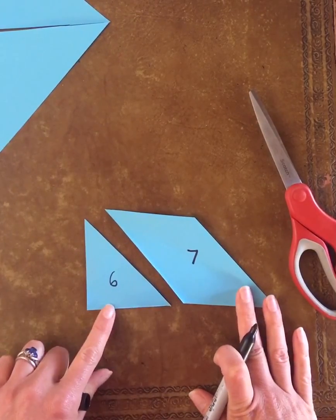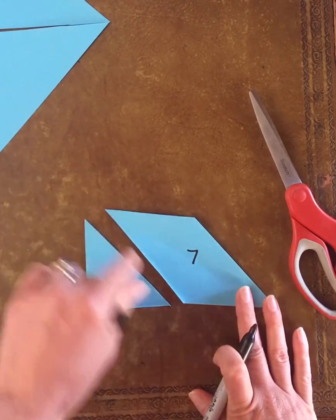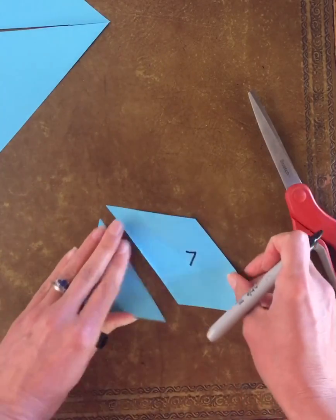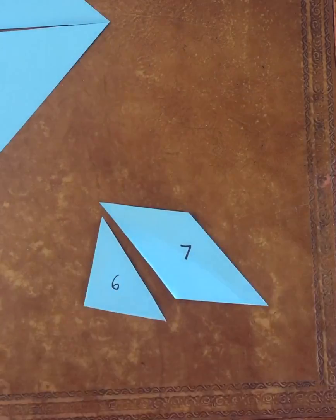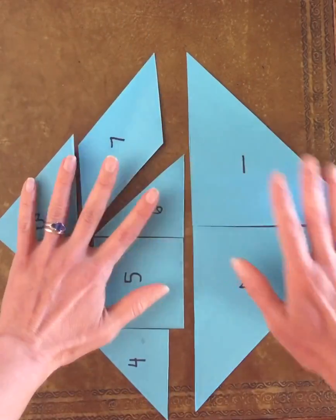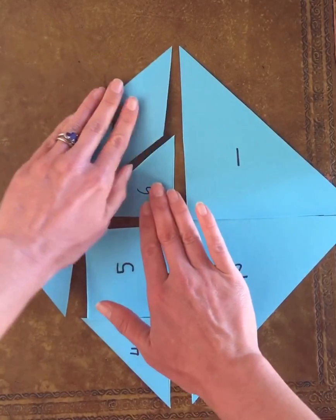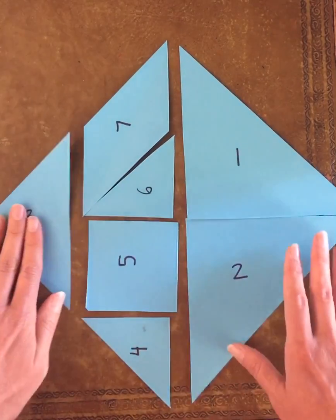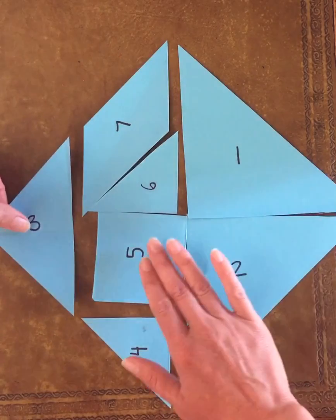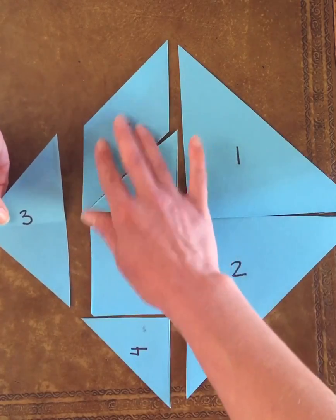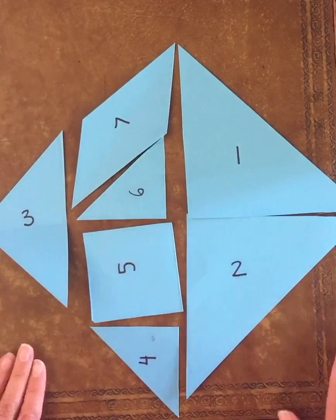And now I have pieces six and pieces seven. I have the smallest yet of my right triangles and I have a parallelogram. So now I have all seven pieces. Let's make sure that they all fit back together just like my original square. And there we go. Now I have used paper, some scissors, and a sharpie to create my very own tangram puzzle set at home.